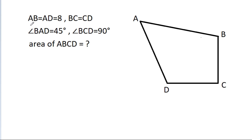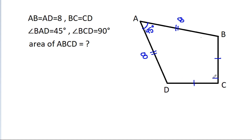In this video, we have given that AB is equal to AD, that is 8, and BC is equal to CD. Angle BAD is 45 degrees and angle BCD is 90 degrees. Then the area of ABCD is equal to what?